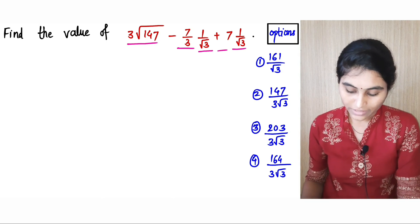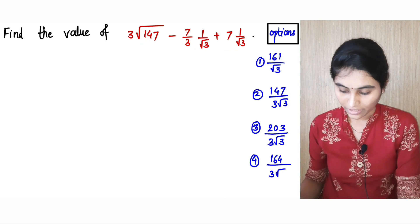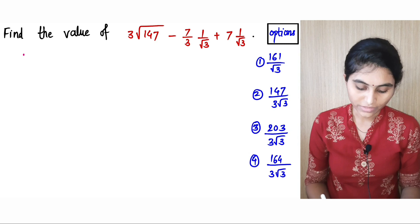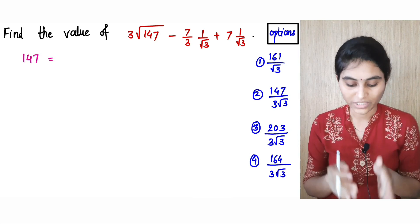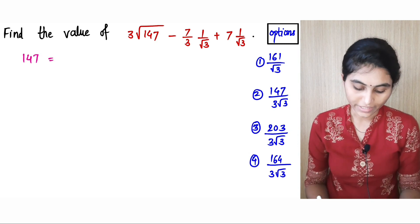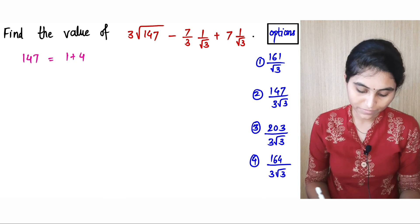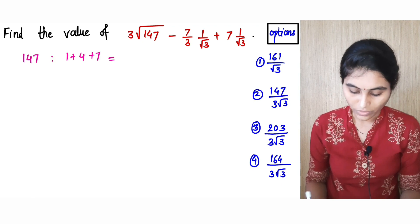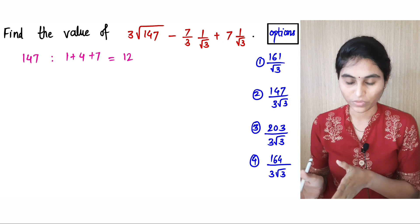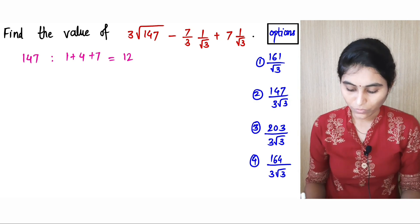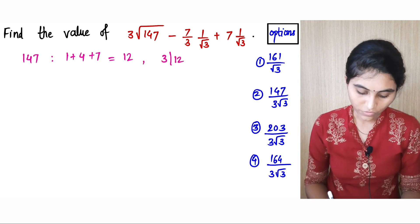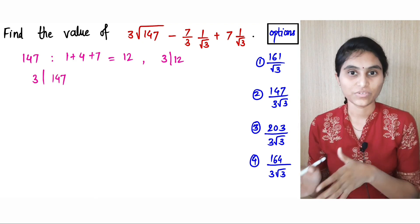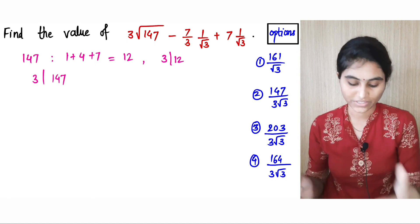Now if you look at this expression, the very first thing is we know that the number 147. If you take the sum of the digits of this number, this is 1 plus 4 plus 7, and this gives us 12. We know that 3 divides 12, so 3 divides 147. That means the number 147 is divisible by 3.